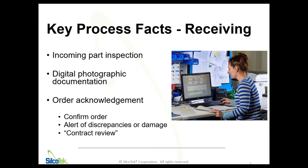We'll document everything that we received via photograph. Then our receiving team will work with our customer service team to send an order acknowledgement — basically confirming your order and making sure you're aware of any discrepancies on your purchase order, or anything that was damaged coming in our door. At that point, the customer service group will engage in what's called contract review, where we compare our order acknowledgement to your purchase order, which is the contract for the order.